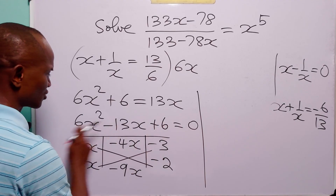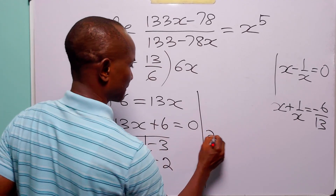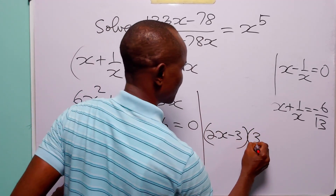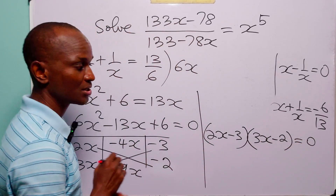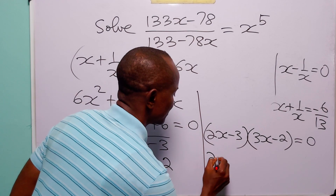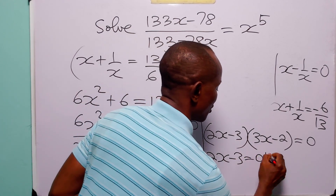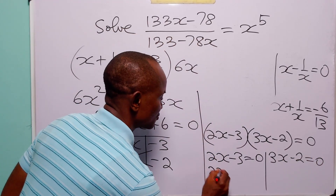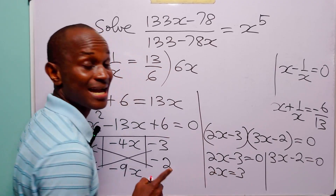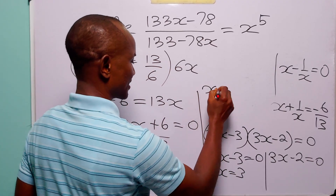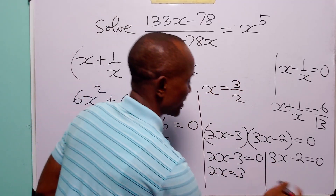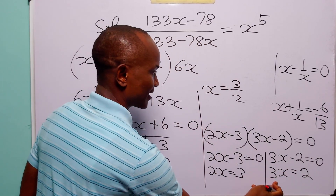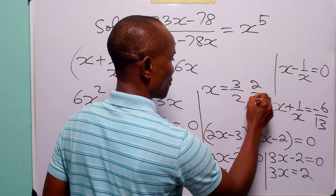So the factors of this quadratic are 2x minus 3 and 3x minus 2, and this equals 0. From here, either 2x minus 3 equals 0, giving 2x equals 3, so x equals 3 over 2; or 3x minus 2 equals 0, giving 3x equals 2, so x equals 2 over 3. We can see that we have two values of x already.